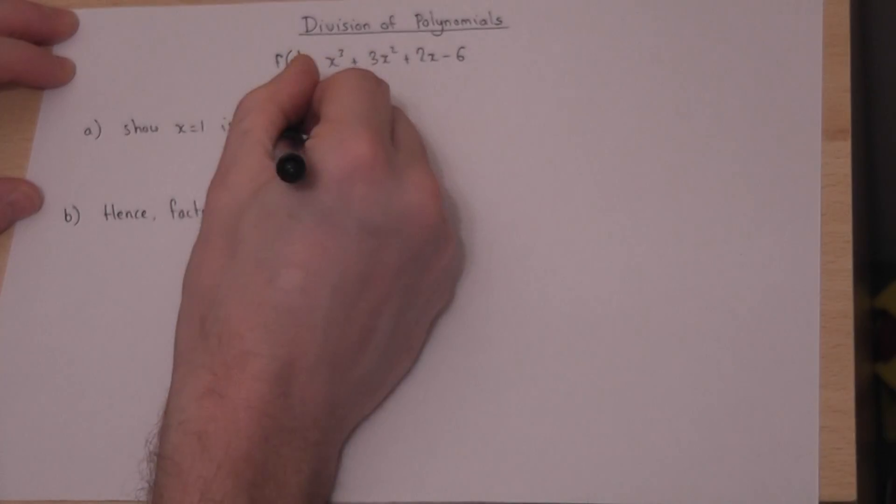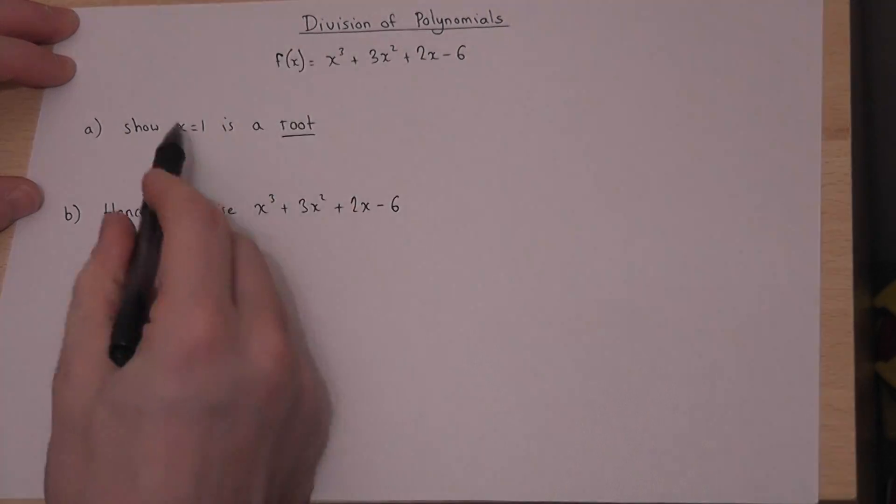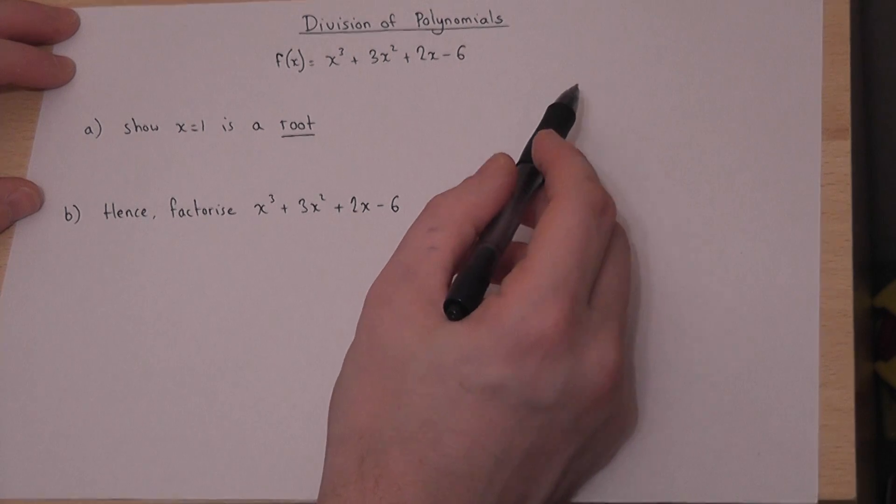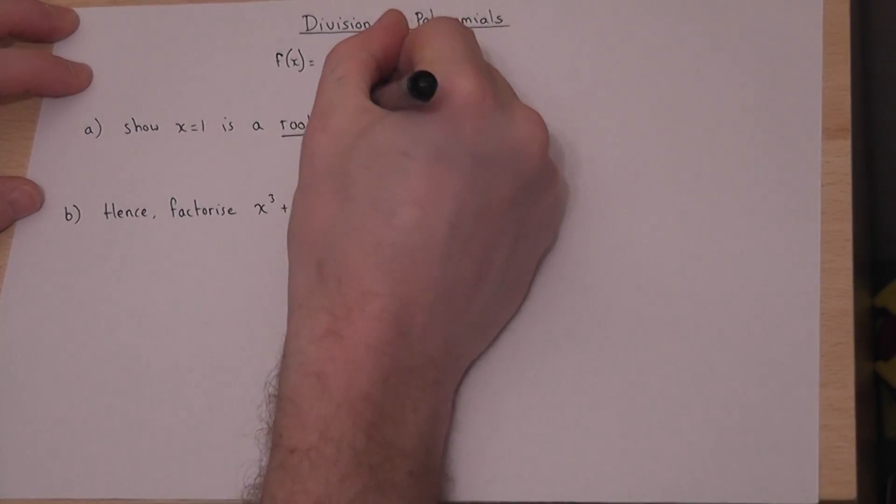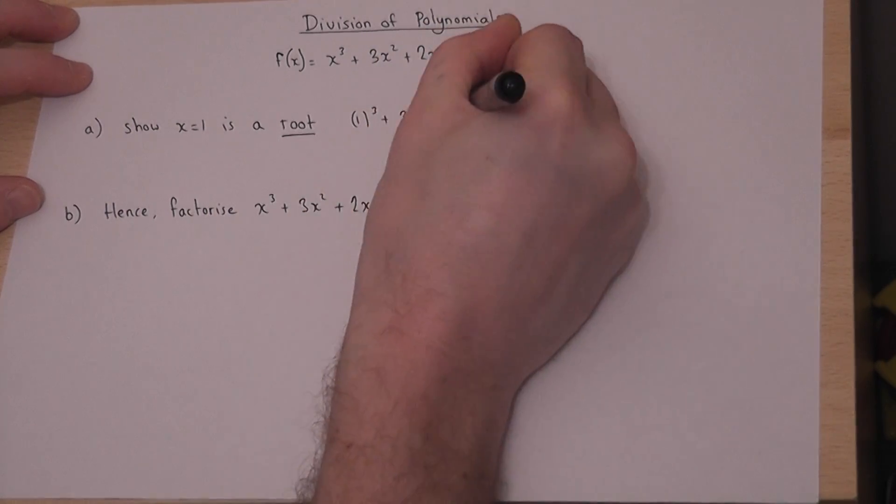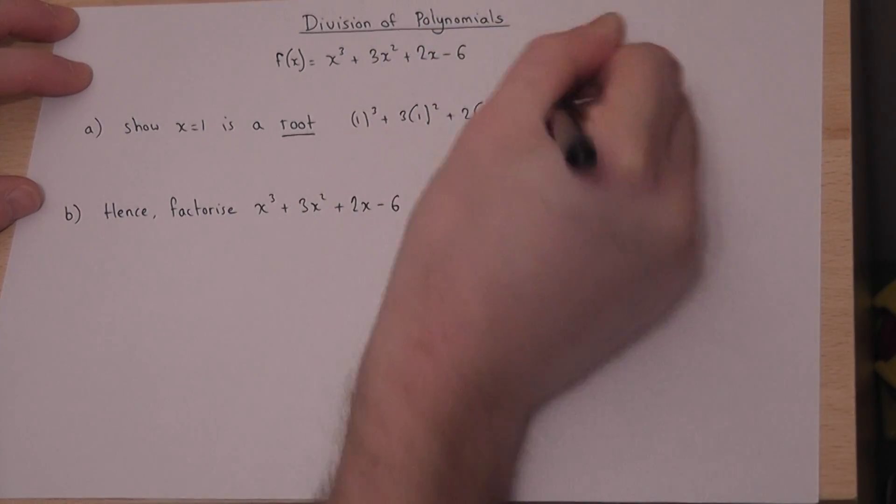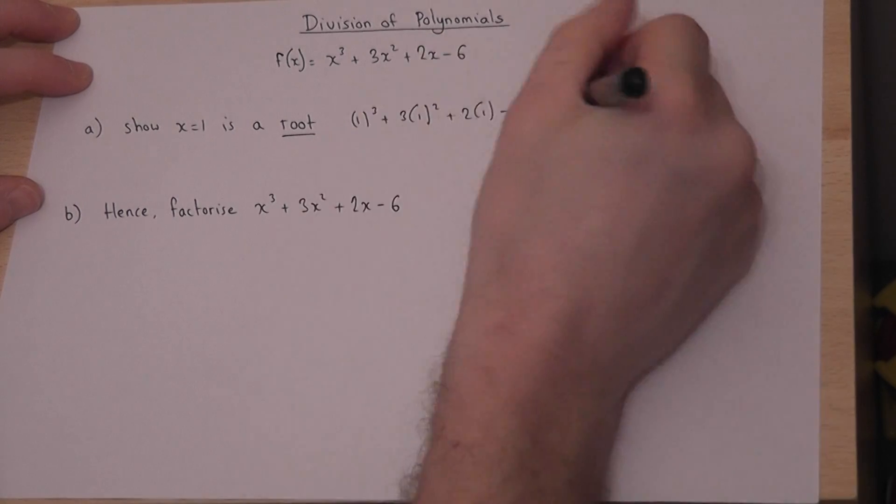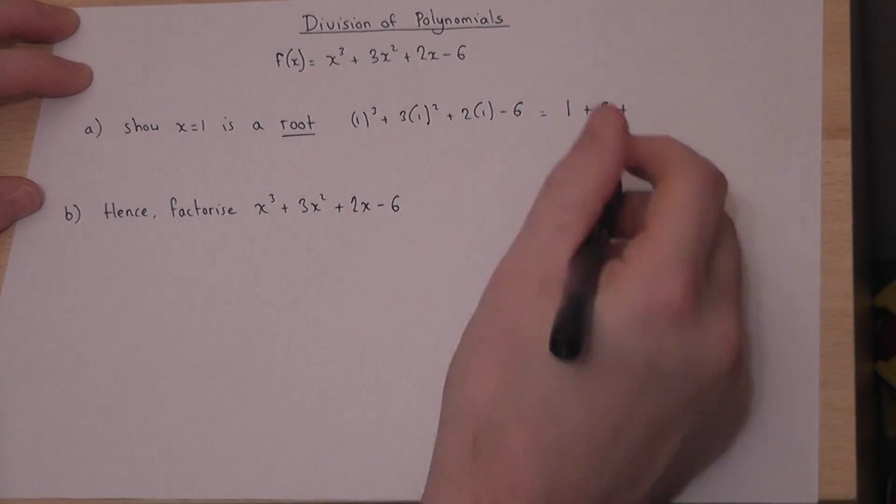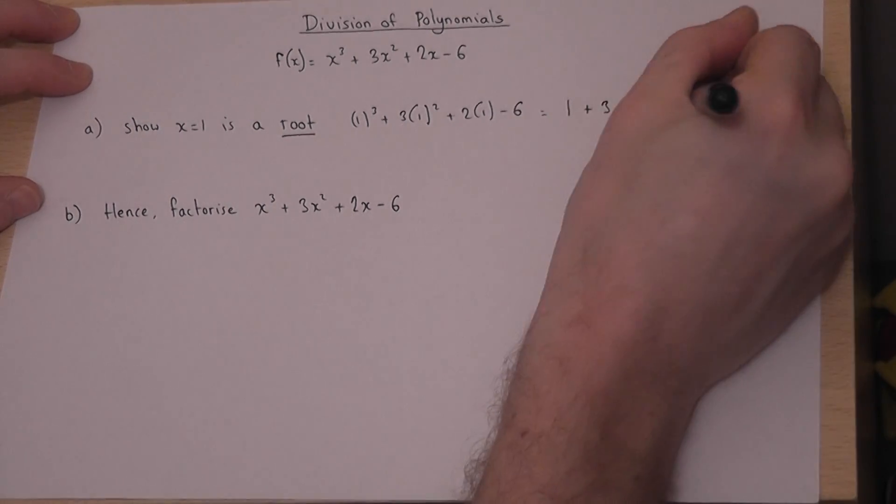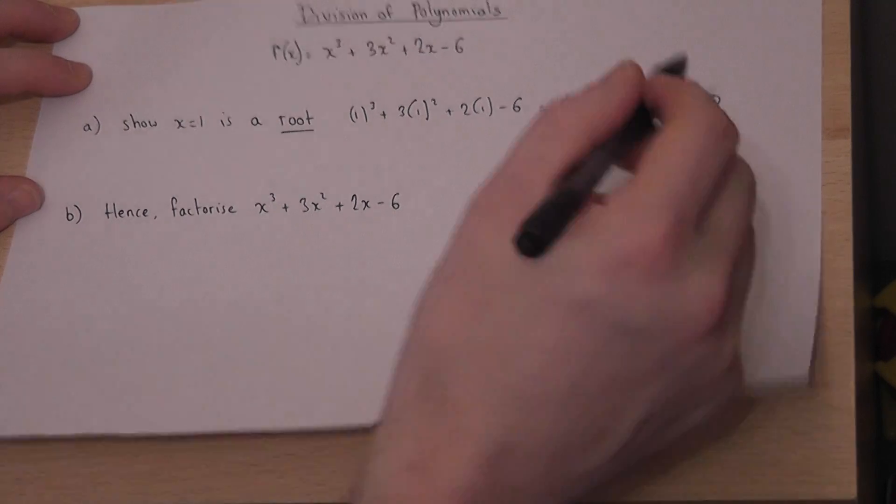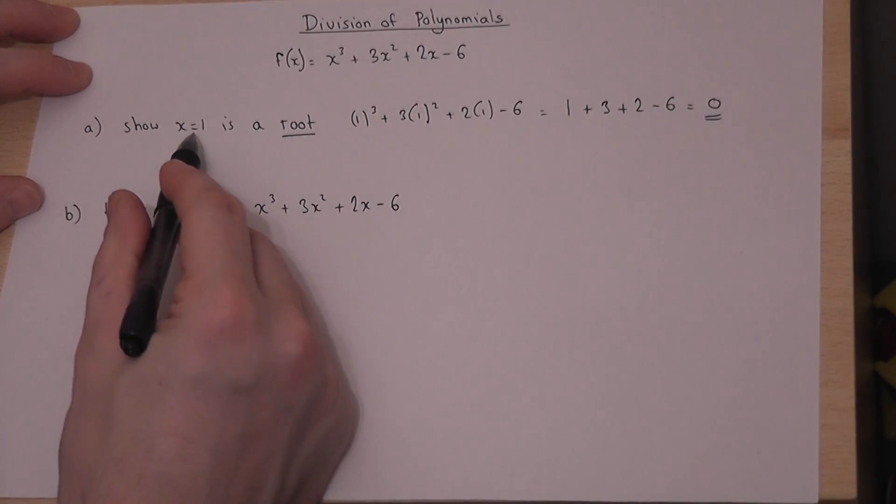Now a root is quite simply a value such that if you put it into the function the answer is 0. So if I let x equal 1, 1 cubed plus 3 times 1 squared plus 2 times 1 take away 6 equals 1 plus 3 plus 2 minus 6 which equals 0. Therefore, because the answer is 0, 1 must be a root.